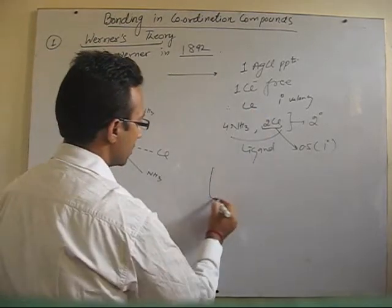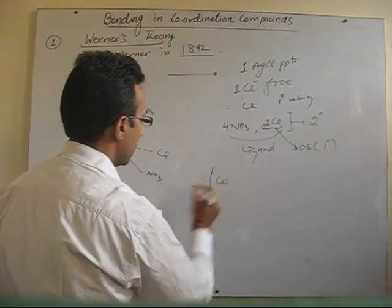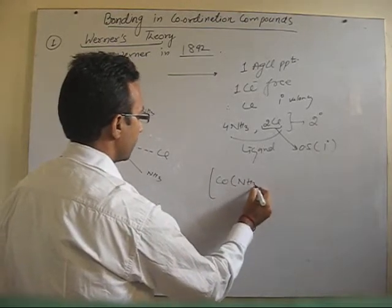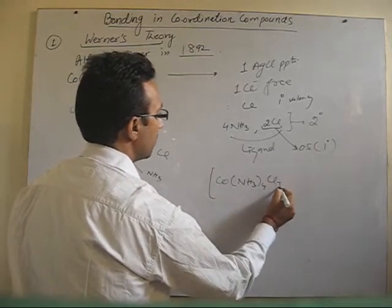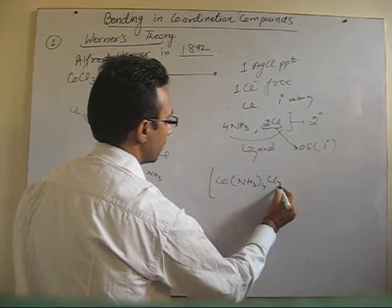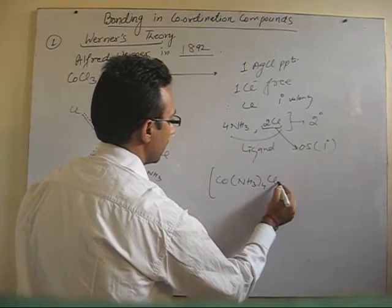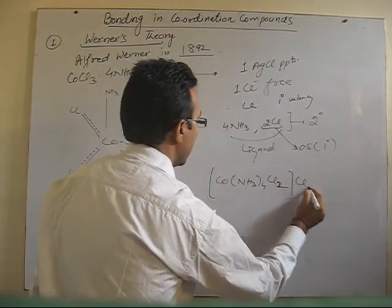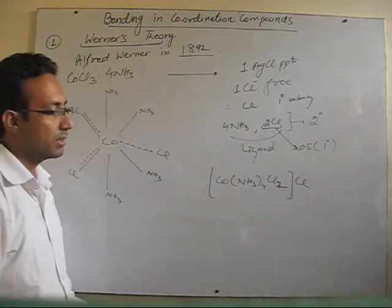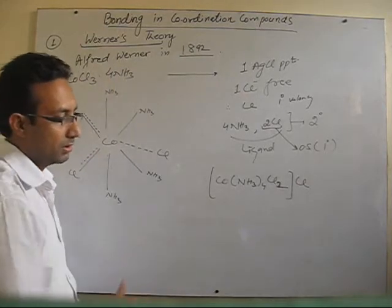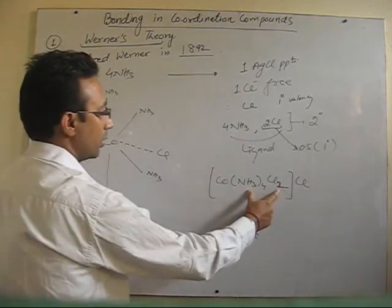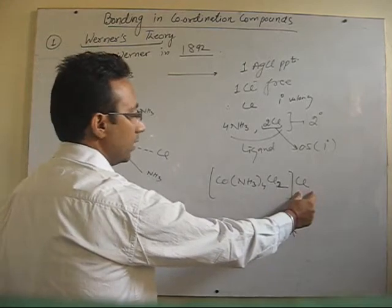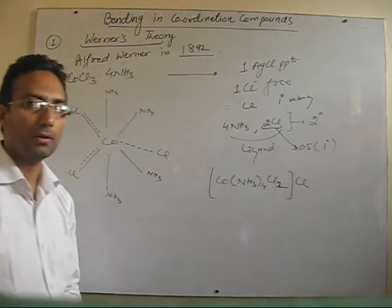Let us represent this complex. The ligands are written inside the bracket. The counter ion — that is, the ionizable part — is outside the bracket. Coordination number is 6, and here one counter ion Cl is given outside.